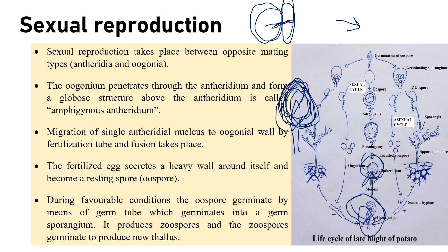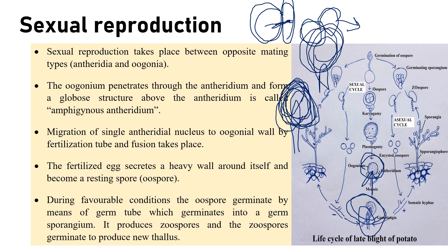Pythium produces paragynous type of antheridium — where male and female lie side by side. Amphigynous means the female reproductive organ passes through the antheridium and forms a globose structure above it. The oospore is formed; during favorable conditions it germinates, and during unfavorable conditions it encysts, producing a thick wall around itself. This is sexual reproduction in Phytophthora.